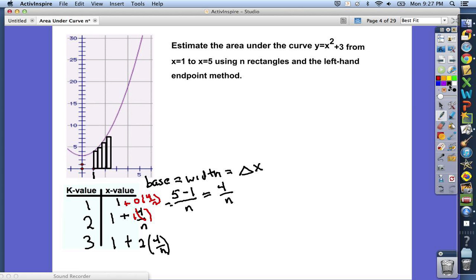So in general, you can see that the x equation is going to be found by 1 plus k minus 1, 4 over n's. My suggestion is to combine that into a fraction, so it would be 1 plus 4k minus 4 over n.